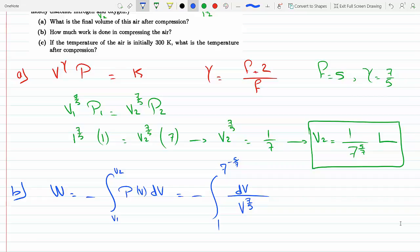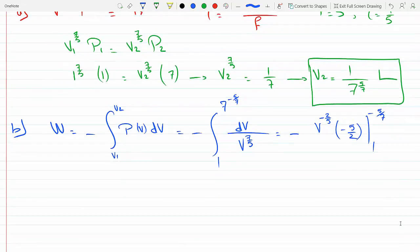This is straightforward integral. This will be V to the minus 7/5 plus 5 over, minus 2 over 5, and we could multiply by negative 5 over 2. This is going from 1 to minus 5 over 7. Plug in the upper and the lower bounds, calculate our work. Finally, I'll just write the answer for you: we get 1.866 atm·liters.